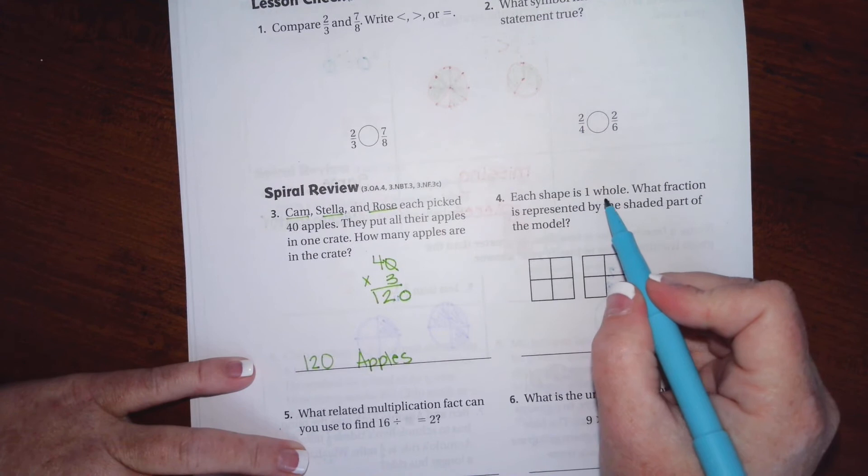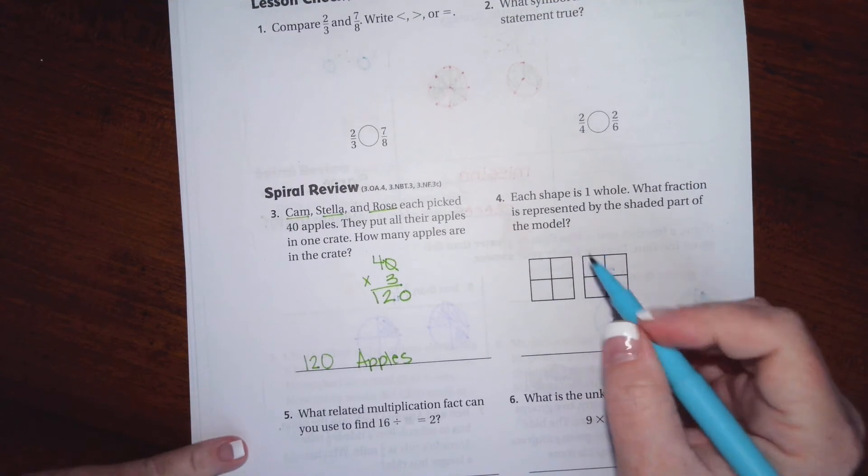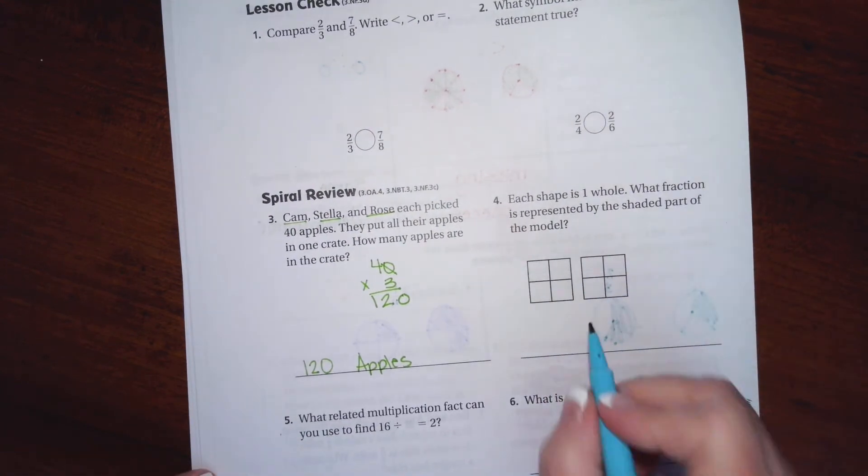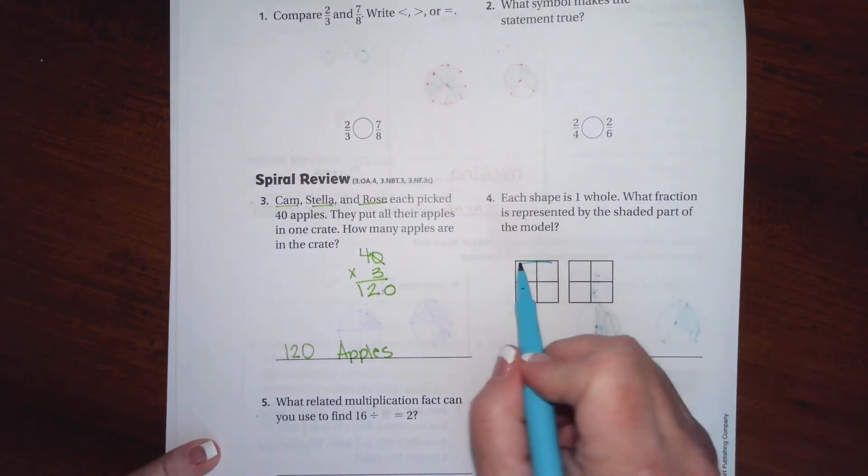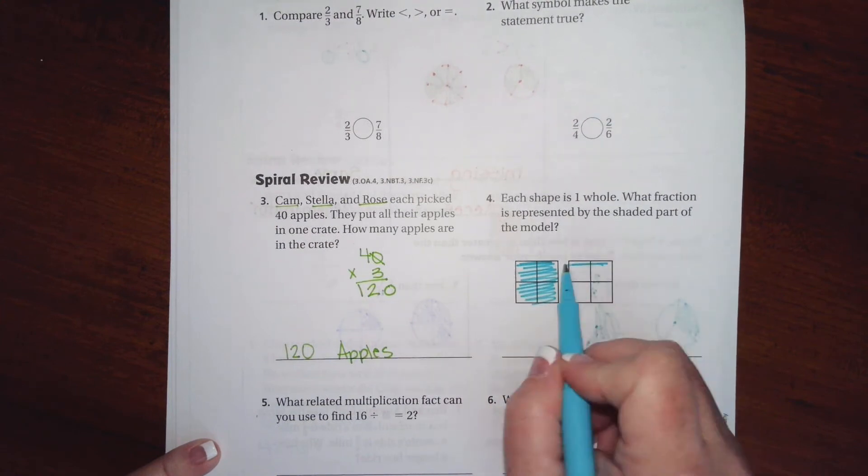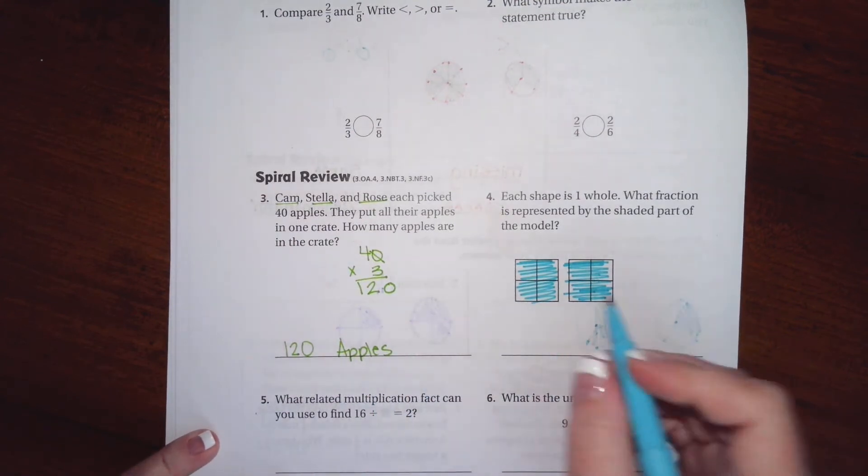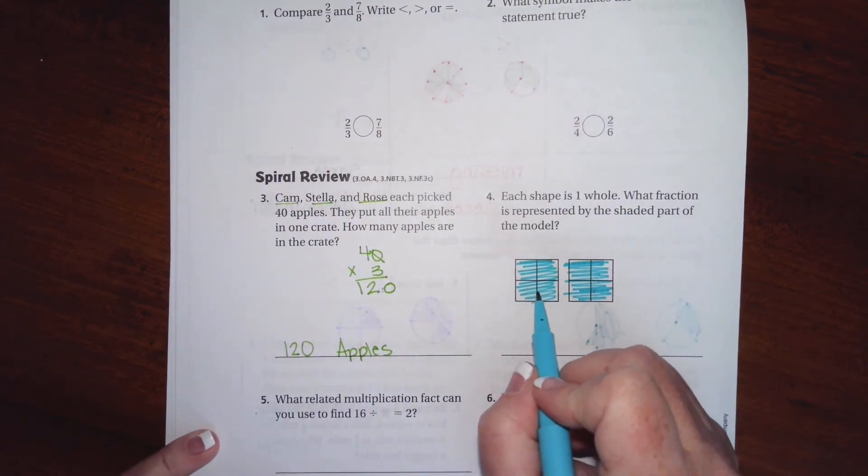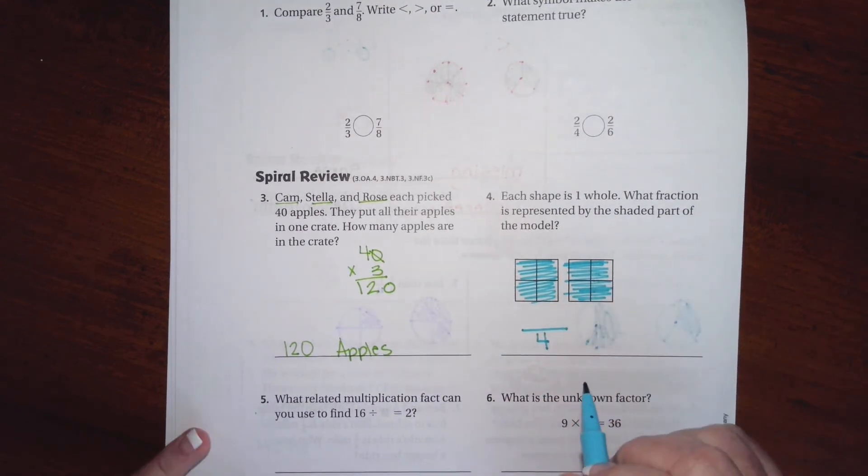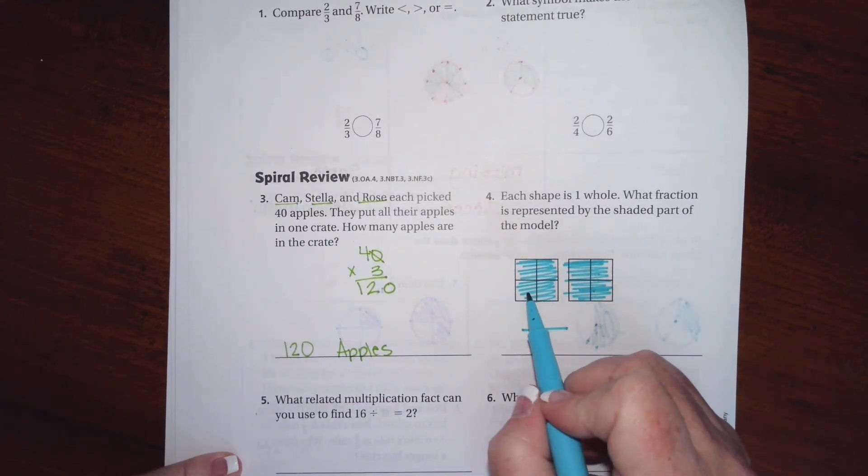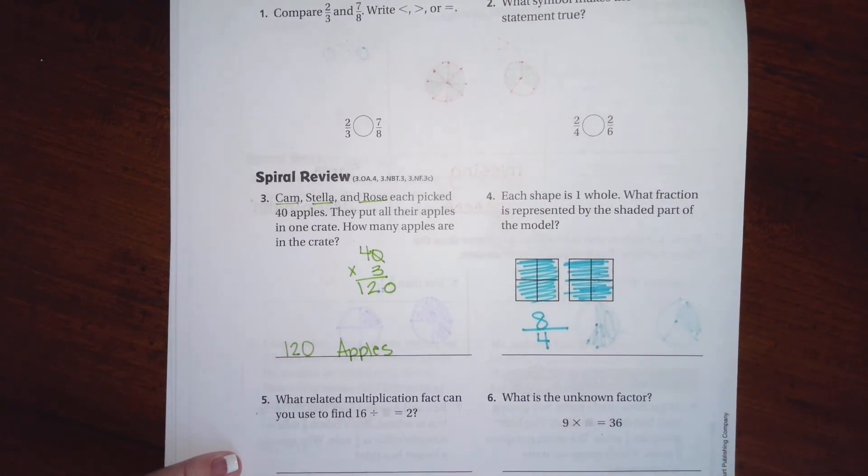Each shape is one whole. What fraction is represented by the shaded part of the model? In the book or on your gray page, both of these will be completely filled in. I know you guys can't really see that because this is a photocopy, but they are completely filled in. We are going to divide these into four, so our denominator is going to be four because we're dividing each shape into four. Now how many of those are full? Well, all of them are, so that's eight fourths.